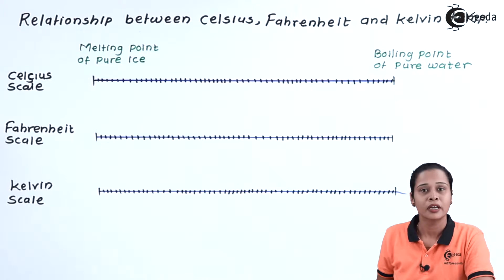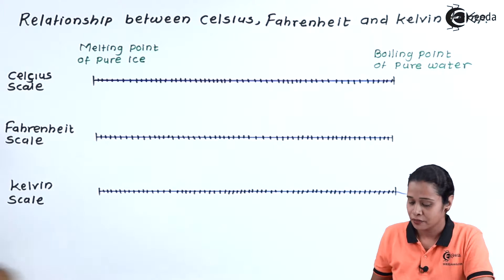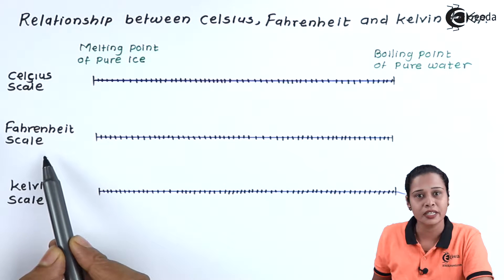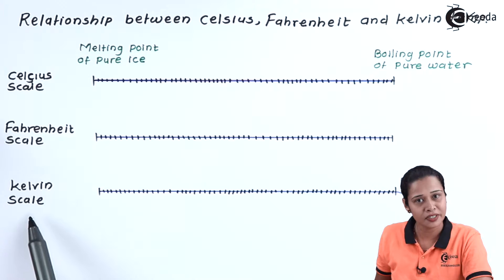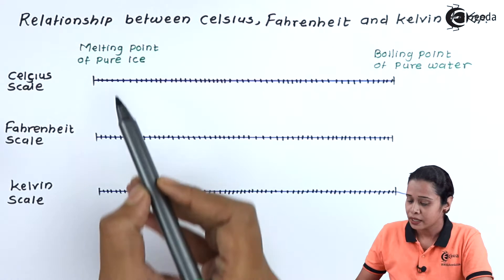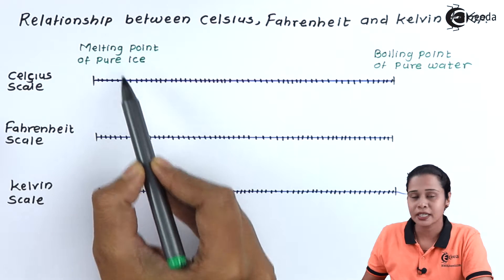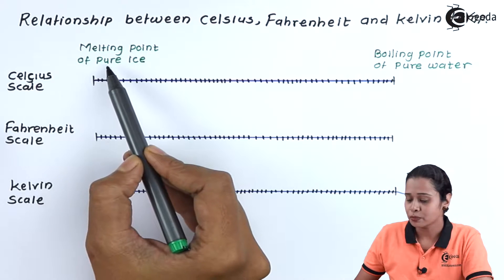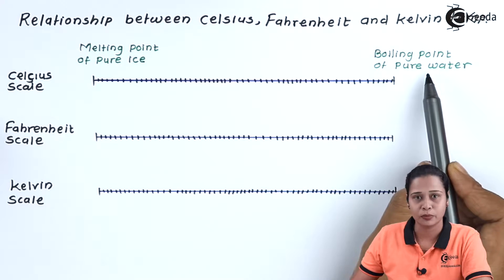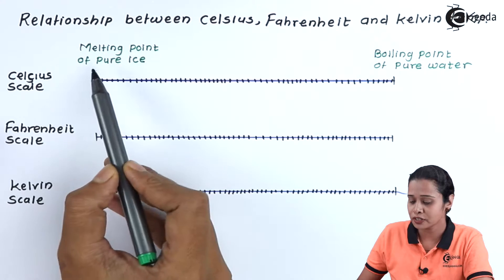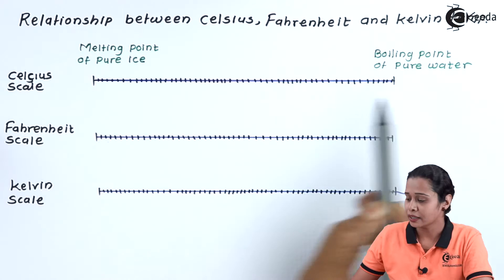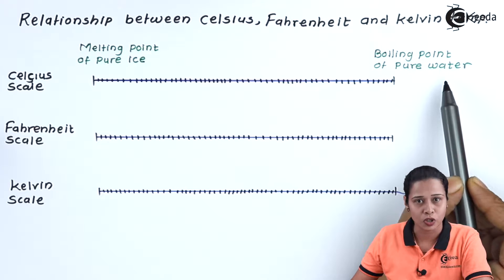Here we have three scales. The first one is the Celsius scale, the second one is the Fahrenheit scale, and the third one is the Kelvin scale. On each scale we will mark the melting point and the boiling point — the melting point of pure ice and the boiling point of pure water.